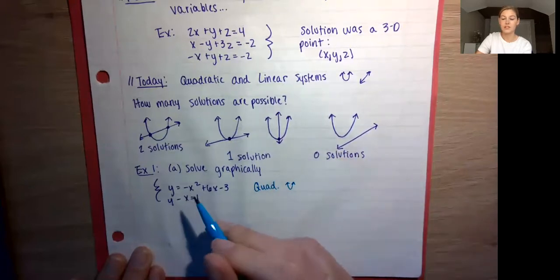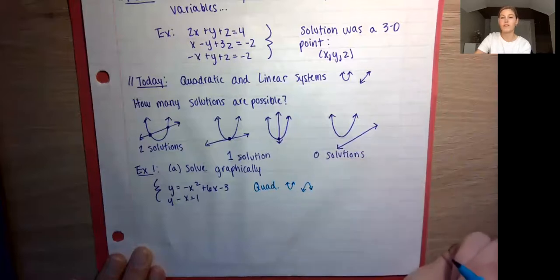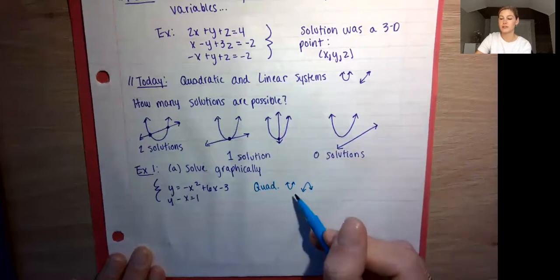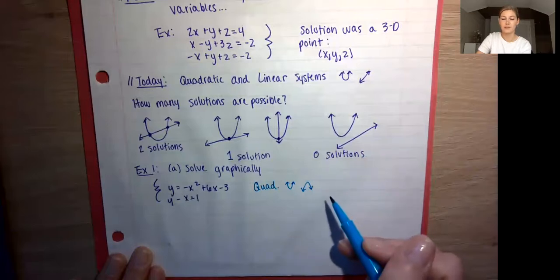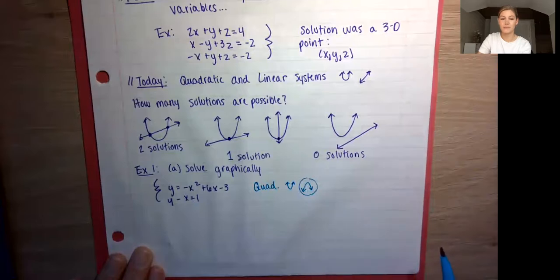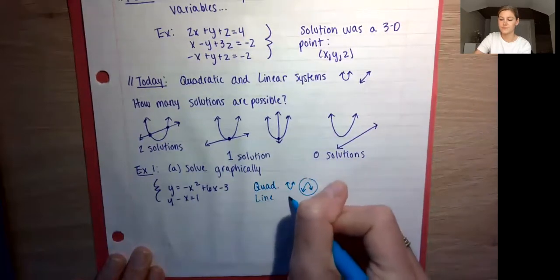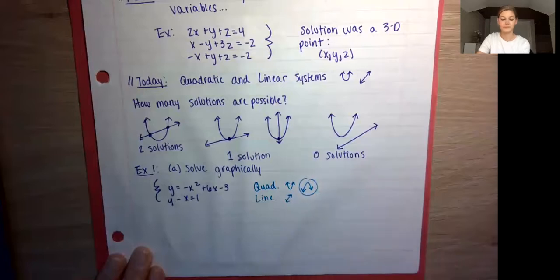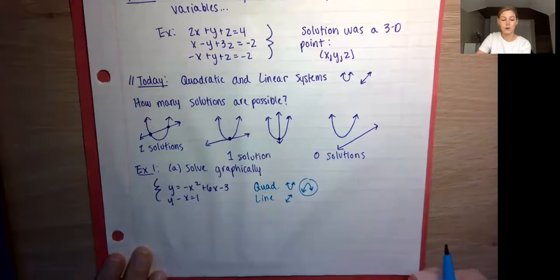If we look at this system, we can see that we have an x², which means this is our quadratic. We can also see there's a negative, so the parabola is going to be down-facing — that negative means our parabola is upside down. And then this, of course, is our line. To solve this graphically, we're going to use our graphing calculator and plug these equations into our y equals.